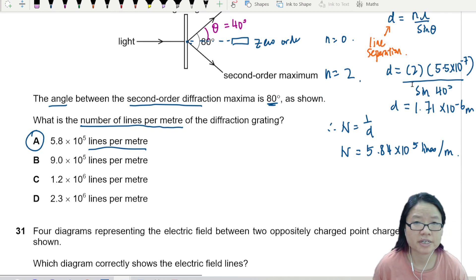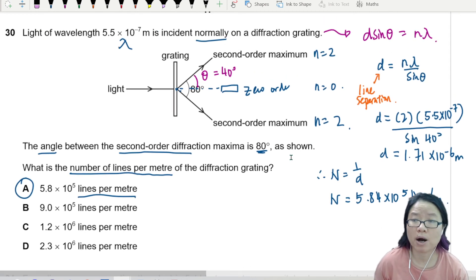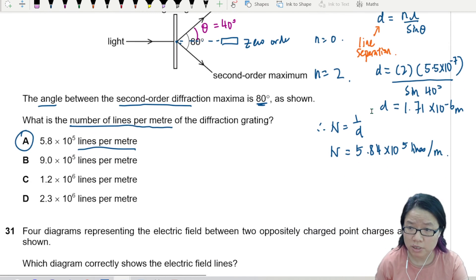So the whole idea here is you use the equation. Just be very careful about making sure that you know what to put into the equation. And this d here is the line separation. Sometimes they will ask for the line separation, and sometimes they will ask for the number of lines, which means you have to take 1 over.